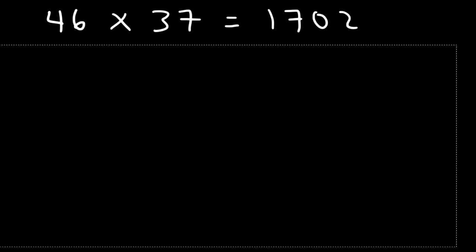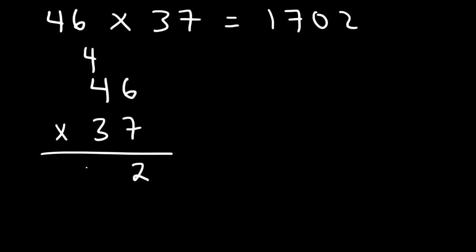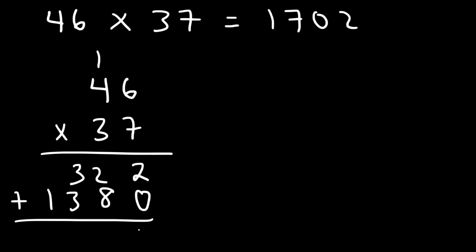Let's confirm with old-school multiplication: 46 times 37. First, 6 times 7 is 42 — write 2, carry 4. Then 4 times 7 is 28 plus 4, which is 32. Add a zero for the next row, then 3 times 6 is 18 — carry 1. 3 times 4 is 12 plus 1, so 13. Adding: 0 plus 2 is 2, 2 plus 8 is 10 — carry 1. 3 plus 3 plus 1 is 7, bring down 1, giving the same answer of 1702.